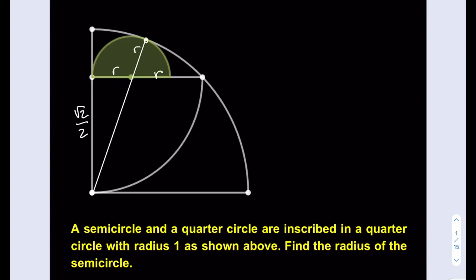As you know, the radius of the quarter circle, the bigger one, is between these two points. So this length, the hypotenuse of this right triangle here, is going to be 1 minus r.